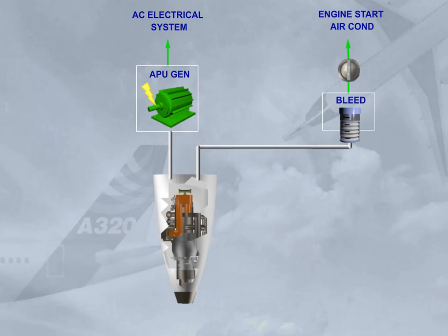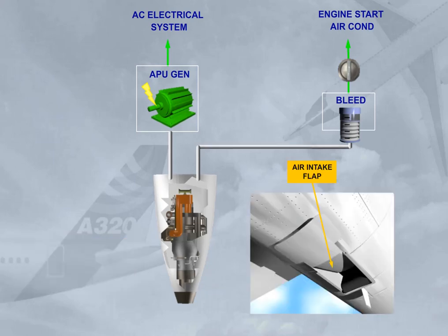The APU has an electrically operated air intake flap which, when it is opened, brings external air to its compressor inlet.